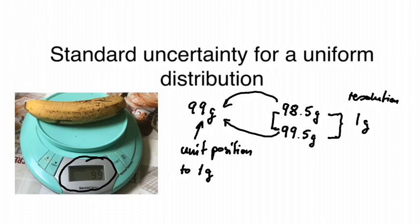We have no idea where exactly the true value is, but we know that it must be between 98.5 and 99.5 grams. And this, for the specialists, would follow a statistical probability distribution of a uniform distribution.